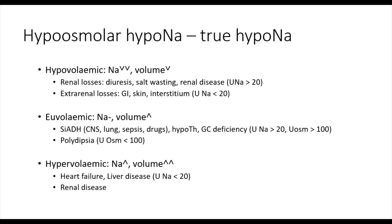To distinguish whether the mechanism for euvolemic hyponatremia is driven by ADH or polydipsia — which are essentially opposite mechanisms — you can use urine osmolality. However, these mechanisms can often be distinguished purely based on the history when specifically inquiring about the amount and type of fluid intake.